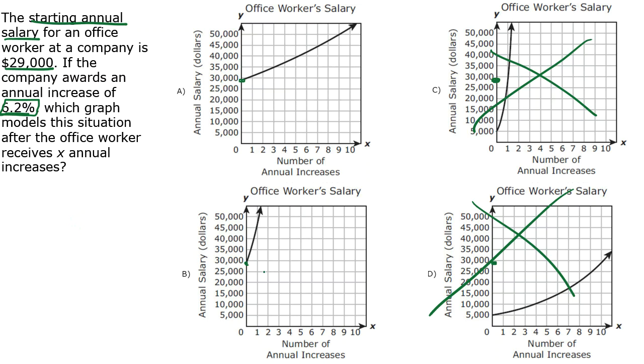One, you could kind of guess and check. 6.2% means that it shouldn't be growing by very much. If something's increasing by 6%, it's not increasing by 100% every year. It's not doubling.